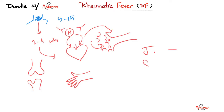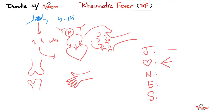As for the O, it looks like a heart, so it is carditis — pancarditis. So I have endocarditis, myocarditis, and pericarditis. Then I have the N: subcutaneous nodules. Then the E: erythema marginatum. And the S is for Sydenham's chorea, also known as Saint Vitus Dance. If you want to learn more about Sydenham's chorea, I have a separate video on this topic in my neurology playlist.